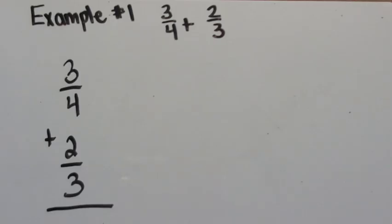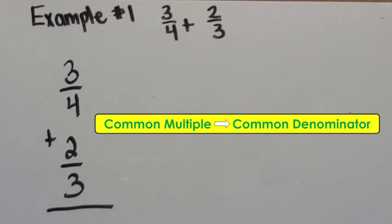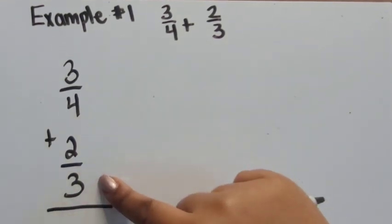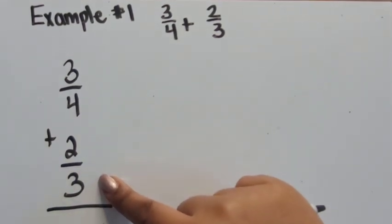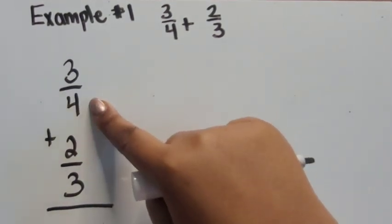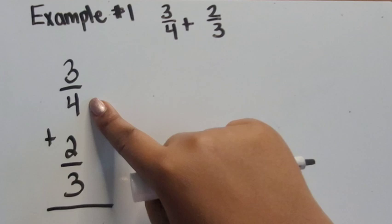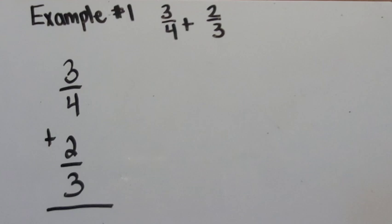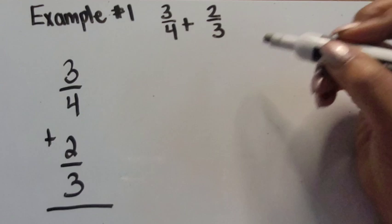In this first example, we're going to use common multiples to find common denominators. We're going to look at the two denominators in the current fractions. Our first fraction is three-fourths and our second fraction is two-thirds. We're going to list out the multiples of four and three to determine what multiples they have in common.